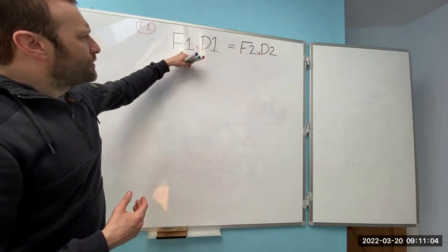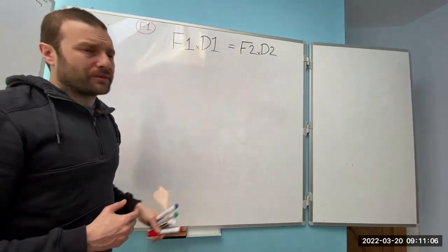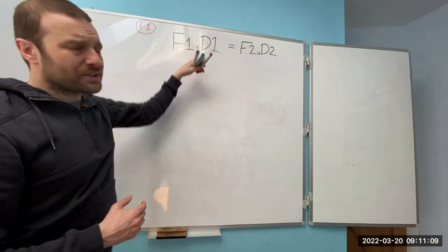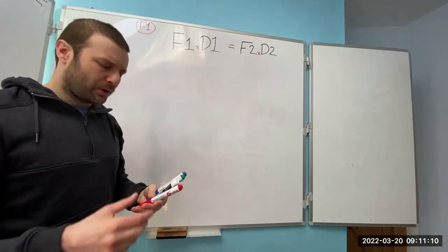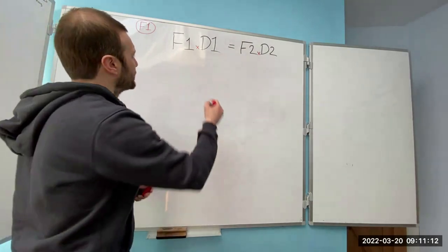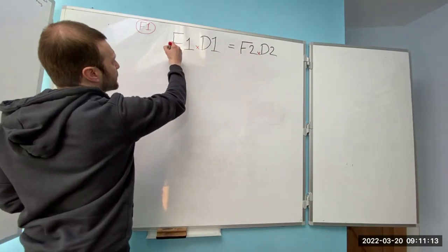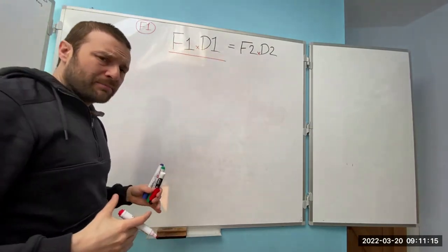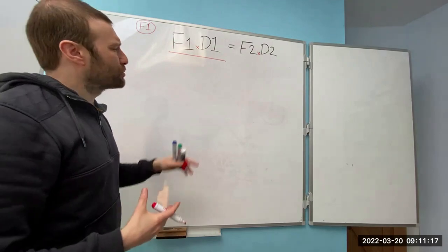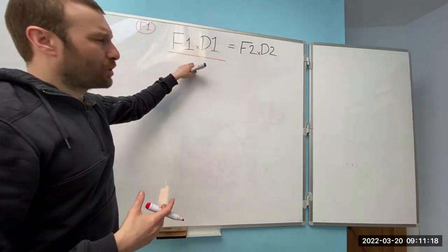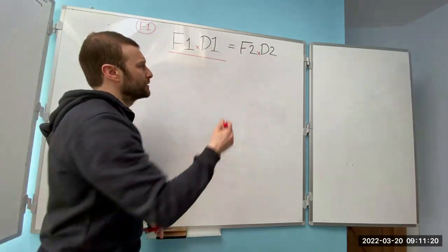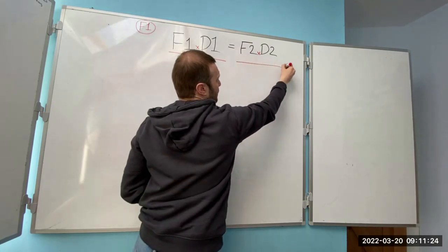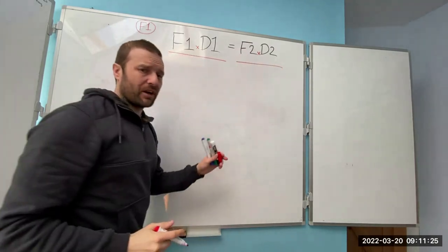At the moment I've got Force 1 times Distance 1, and what I need to do is the opposite of times. The opposite of times is divide. One of the most important things about this is: whatever you do to one side, you have to do to the other. So if I'm going to be dividing this side, I'm going to be dividing that side.